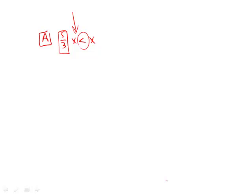There's no way by plugging in any positive value that we'll be able to get an instance where five-thirds x is less than x, so we can eliminate answer choice A. Answer choice B: